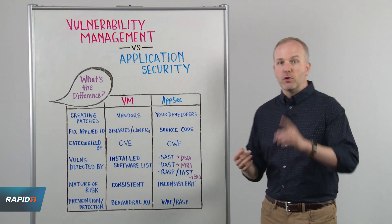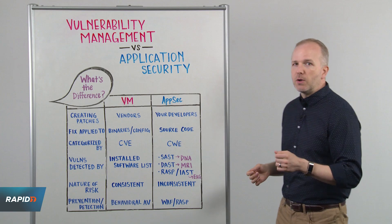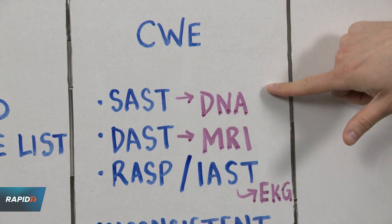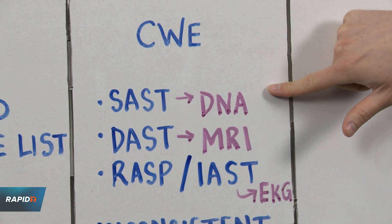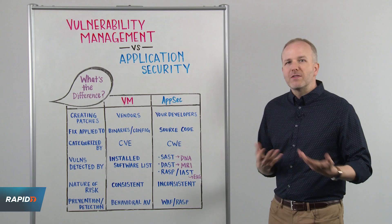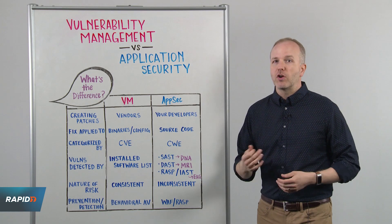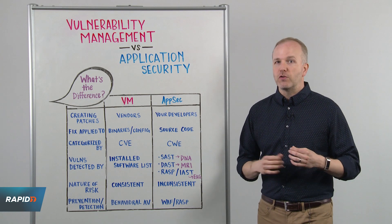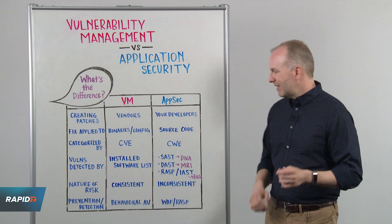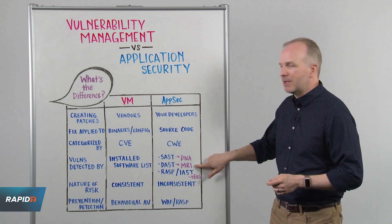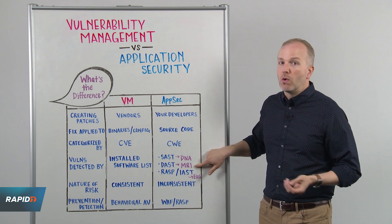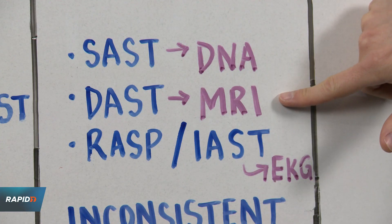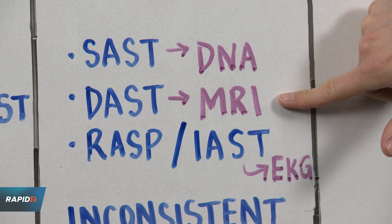There are a few different ways you can find CWEs. First of all, you can scan the source code to look for vulnerabilities using SAST tools. This is a lot like getting a DNA test to determine which disorders you might have. You can also attack the live application and attempt exploitation in a manual or automated way, and this is usually done with pen tests or DAST tools.